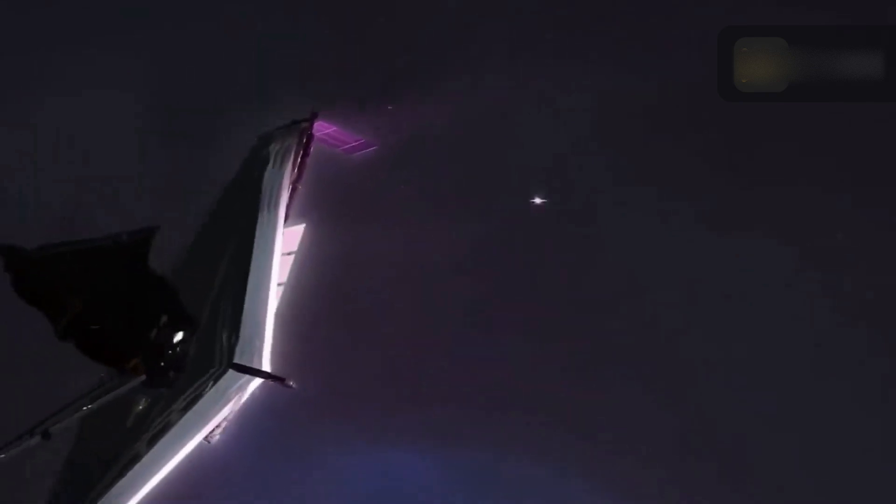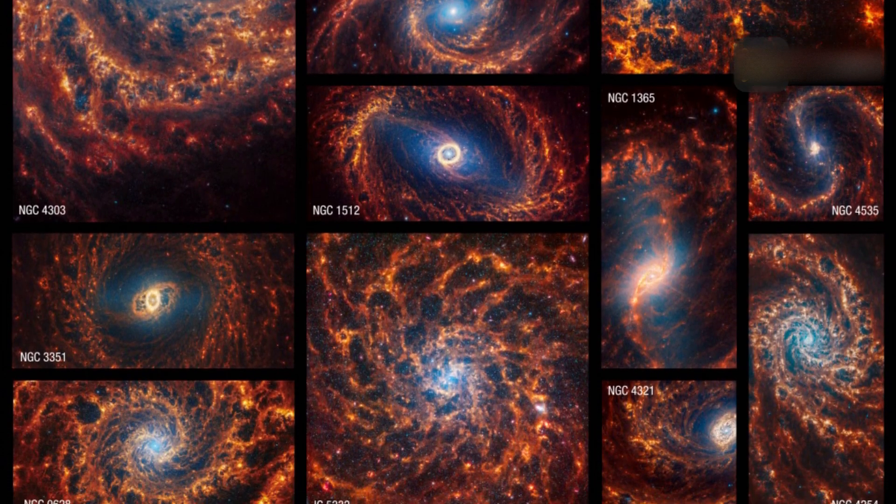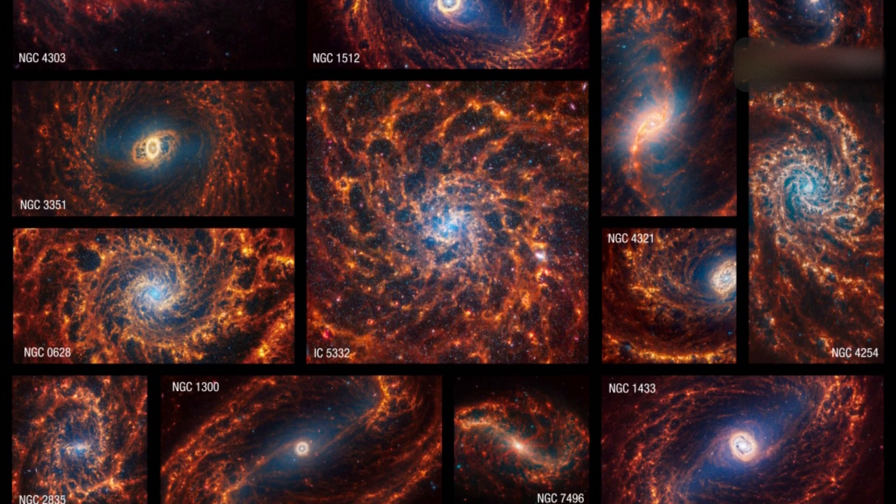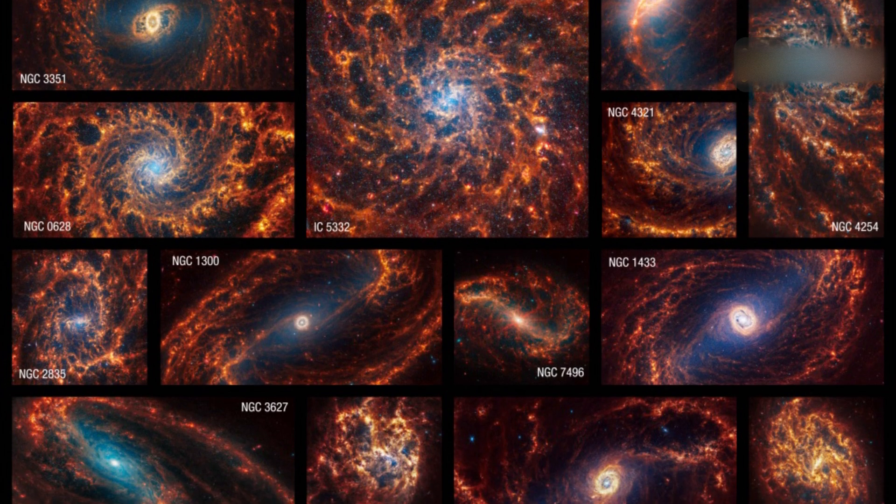NASA's Webb depicts staggering structure in 19 nearby spiral galaxies. These JWST images had particularly excited astronomers while in the process of being delivered because they emphasized that no two galaxies are the same when viewed with the kind of precision the JWST can offer.